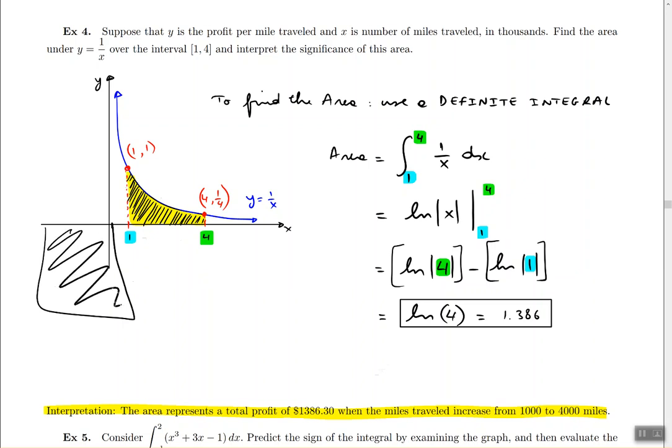So anywhere underneath the x-axis, they would count as negative. Sometimes the area underneath the x-axis is really massive, and the areas above the x-axis are really small. So when you add up the massive negative number with the tiny positive number, your result ends up being negative. Instead of a profit, it would be a loss.